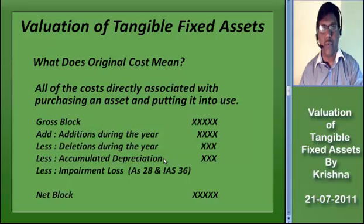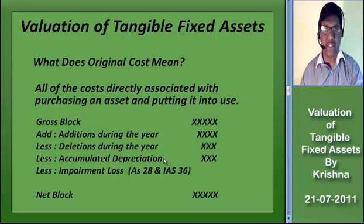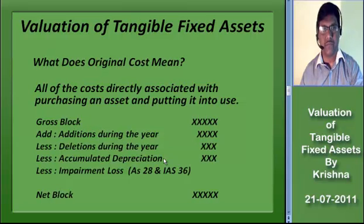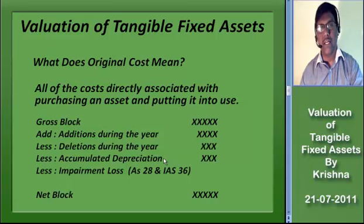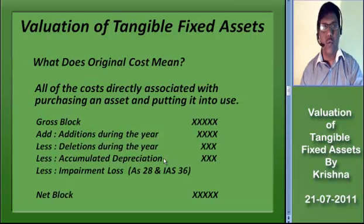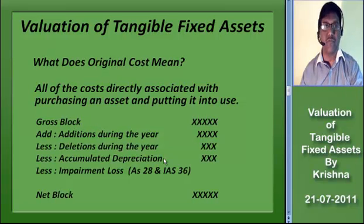Tangible fixed assets are valued for presenting them in the balance sheet with due reference to the Companies Act provisions and the relevant accounting standards. Fixed assets are initially recorded at acquisition cost, which includes all expenditure to get the asset ready for use. Subsequent expenditure is added to the cost only if it will produce economic benefits beyond its originally assessed performance.